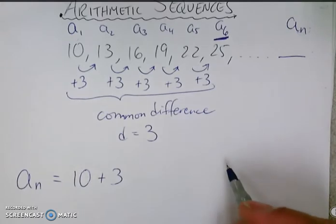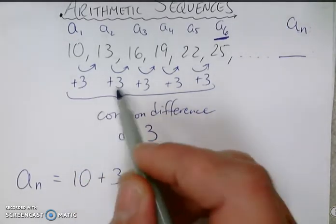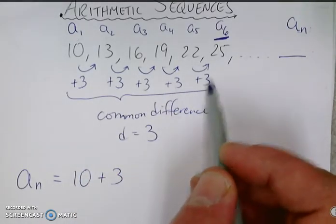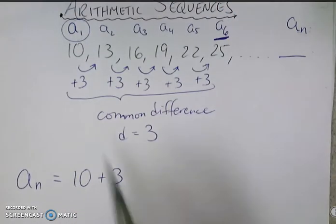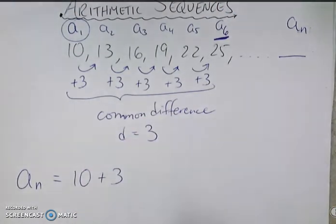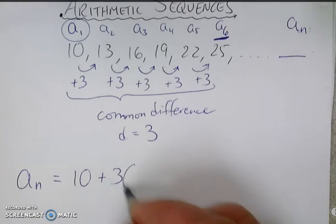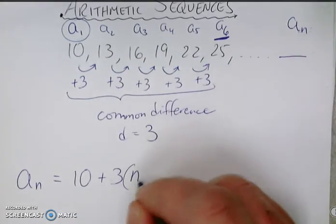By the time you get to the 6th term, you added 3, 1, 2, 3, 4, 5 times. Because you started with the first term, and you added 5 more 3's. So you're going to add 3, not that number of times, but n minus 1.